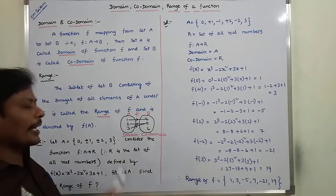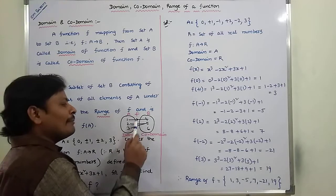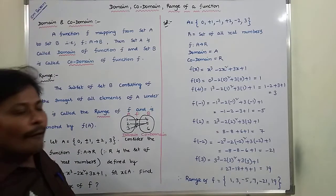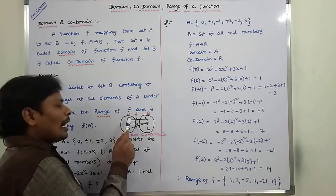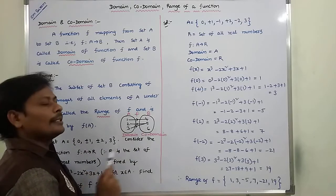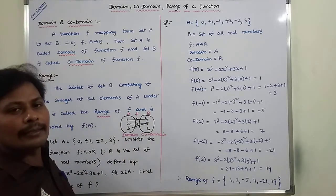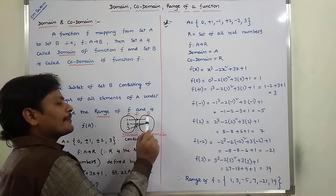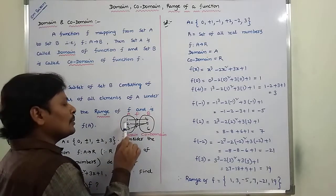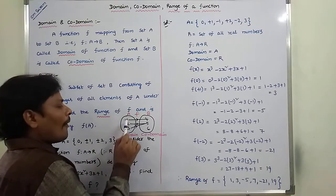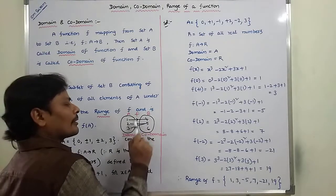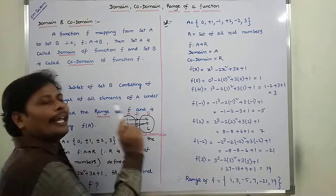Now, what is the difference between range and co-domain? Co-domain means the set of all elements in set B. Range means, for all the elements of set A, what are the images in set B — that set of images is called the range. Here, co-domain is {4, 5, 6} and range is only {4, 5}, because all elements of set A — 1, 2, 3 — have images only 4 and 5. So the range of function F is equal to {4, 5}.